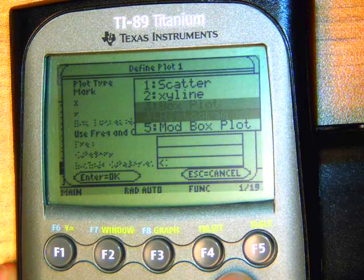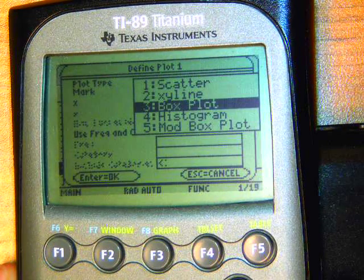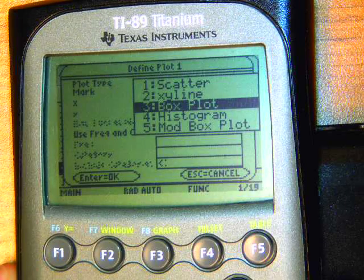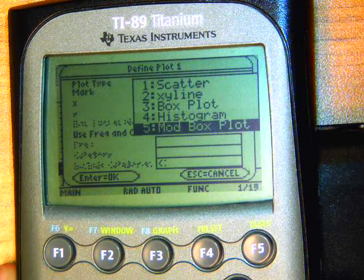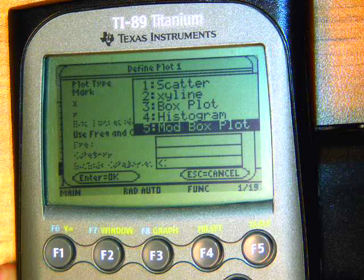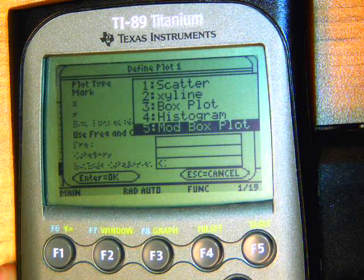The one here on option 3, that box plot will not find the outliers. And as we discussed in class, we're going to want to use the one with outliers. So use modified box plot.